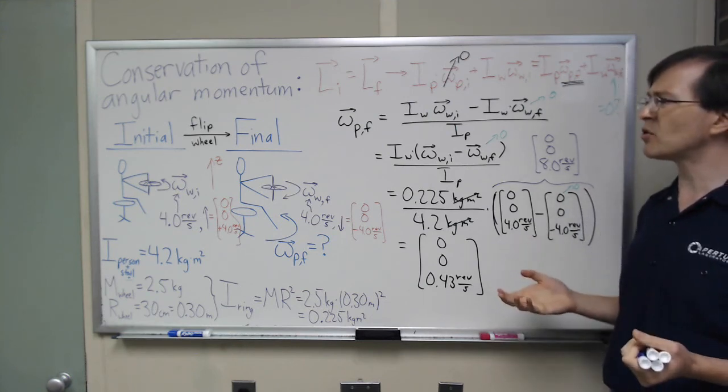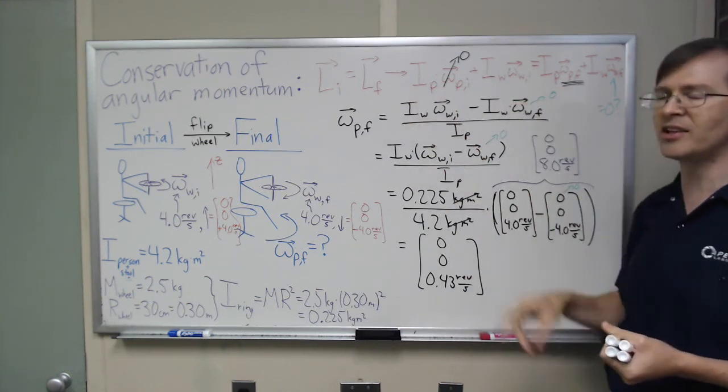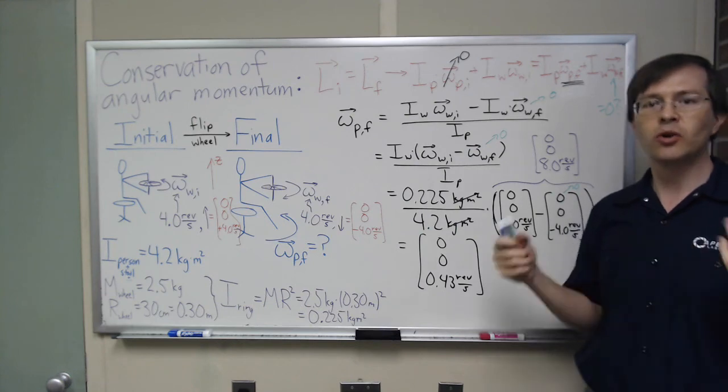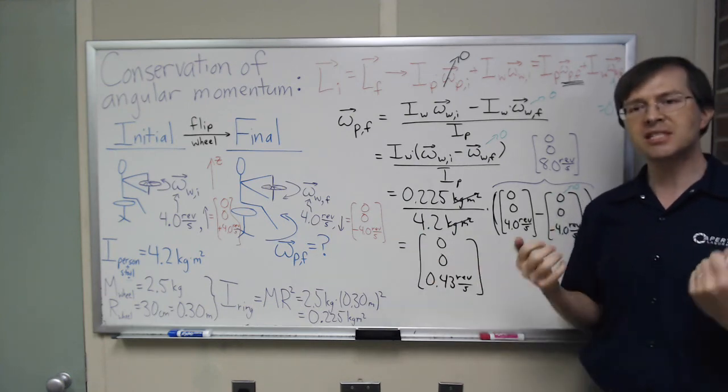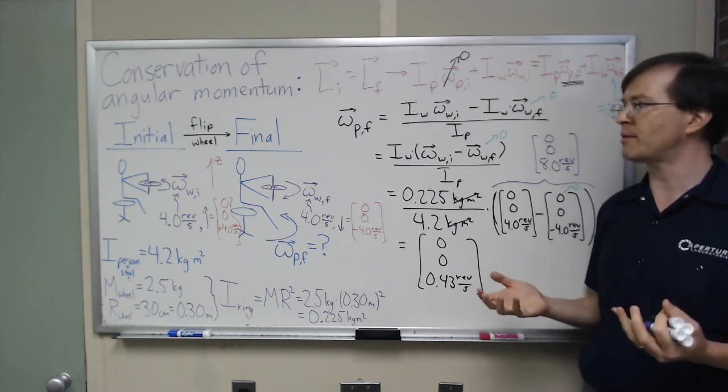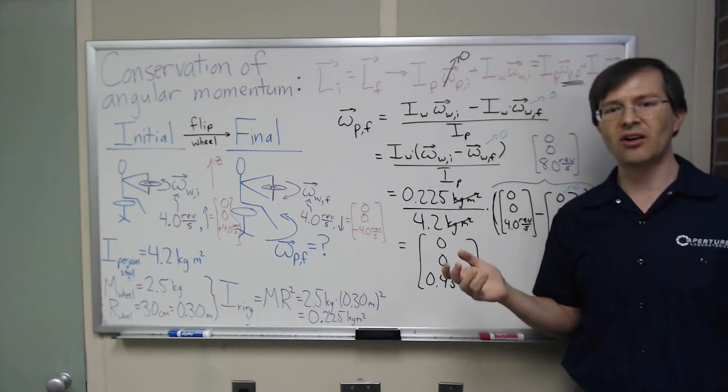So that's how conservation of angular momentum works. It's just a matter of taking all the pieces initially and all the pieces finally and putting them together. Obviously, there's more to it than this. There are more complicated situations with, like, straight line motion as well, but this is the core idea of how you can solve this type of problem. It's all about knowing the moments of inertia and the angular velocities, and solving for the unknowns.